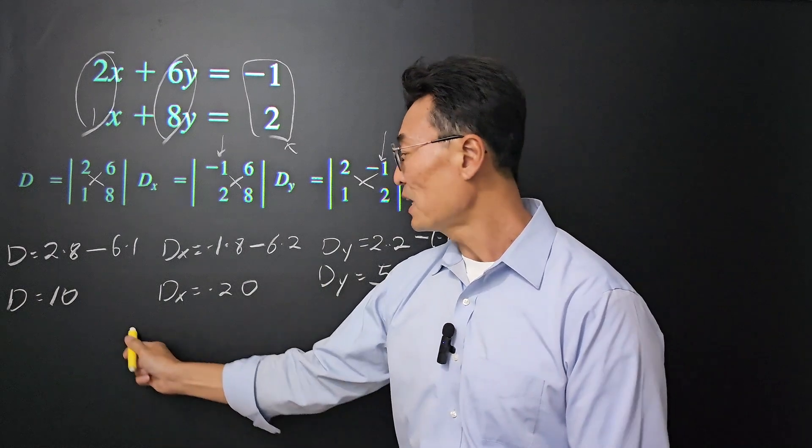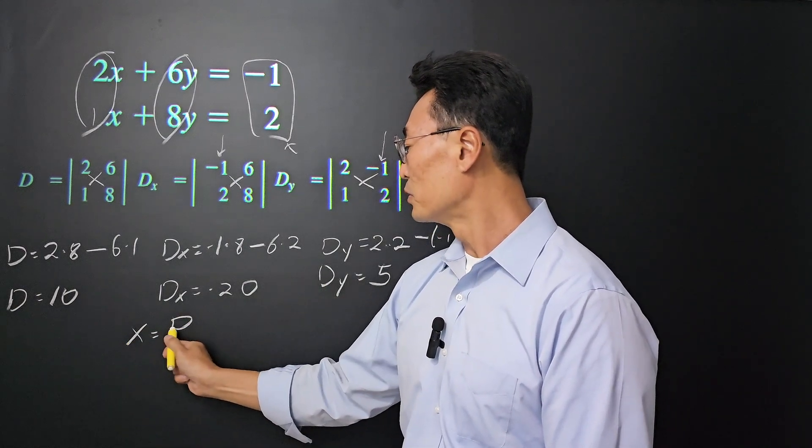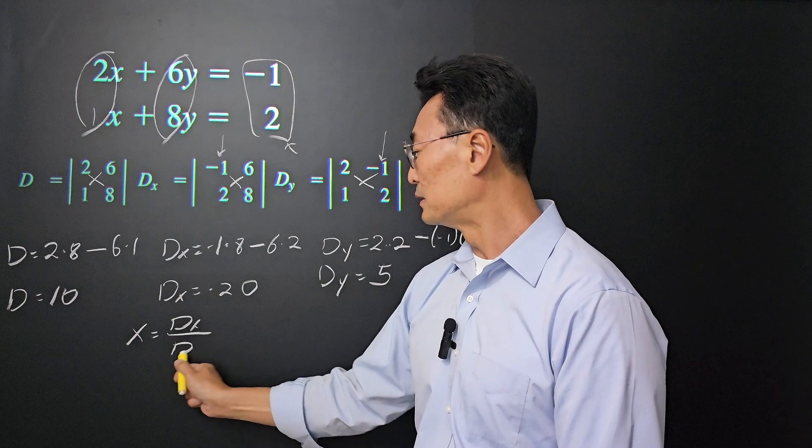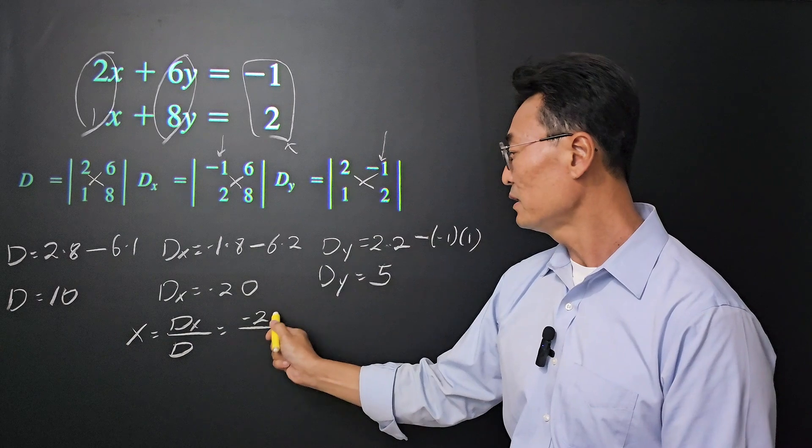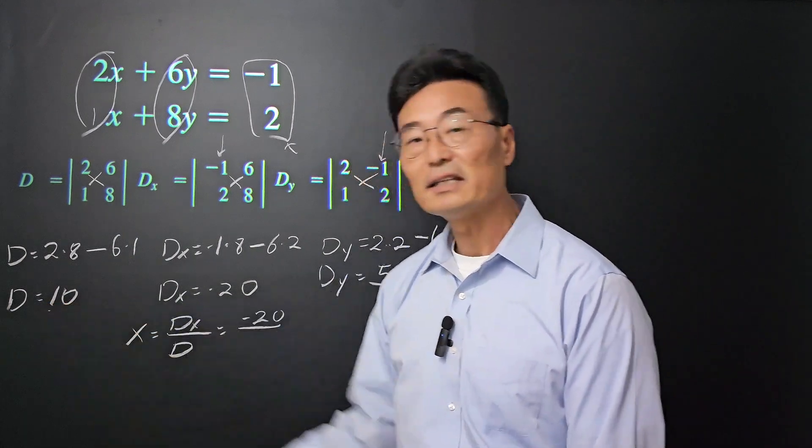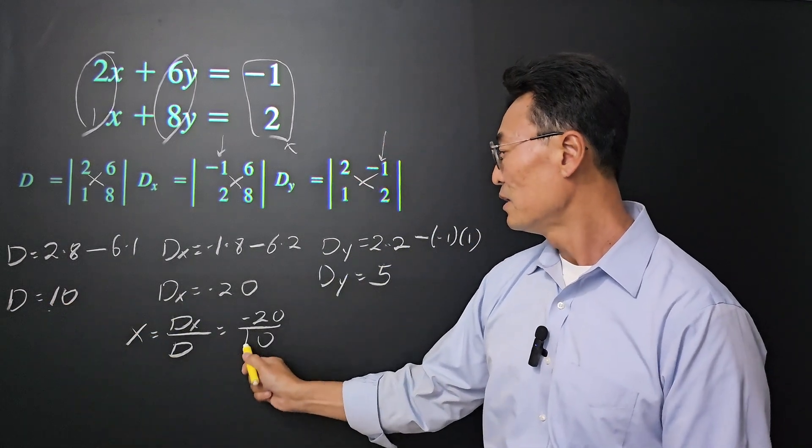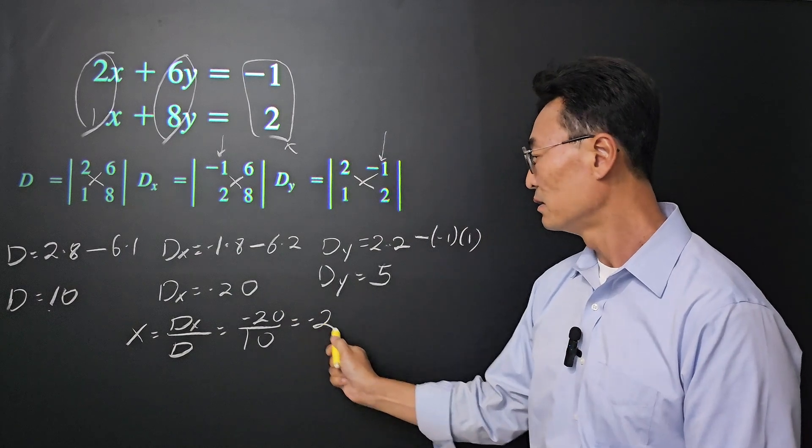We're almost done. To find x, we do Dx over D. Dx is negative 20, and D is 10. So x equals negative 2.